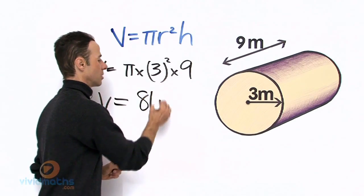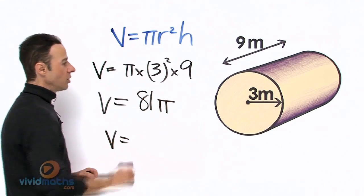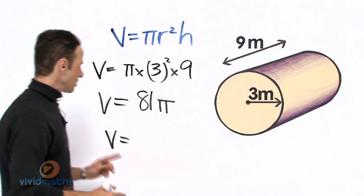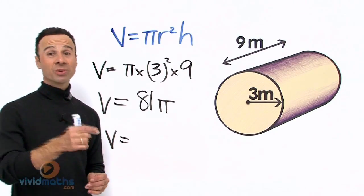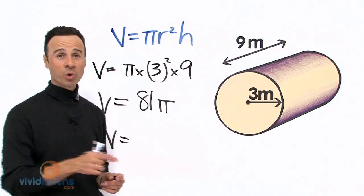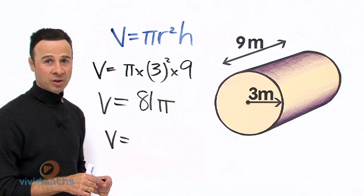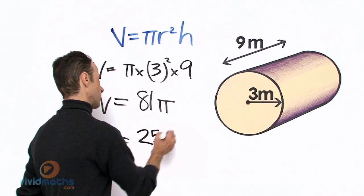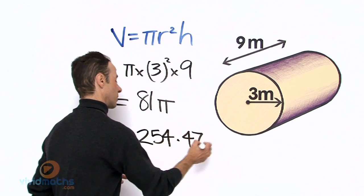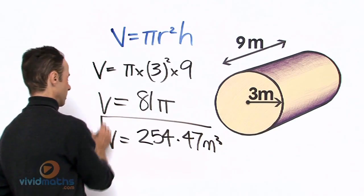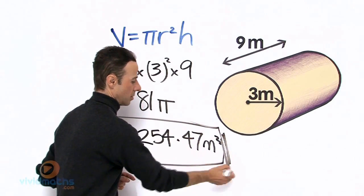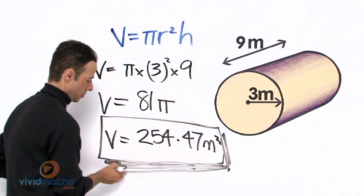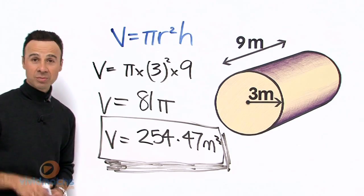So the complete volume inside the space of this cylinder is 81 times pi — or 81 times 22 over 7, or 81 times 3.14, and so on. Put that in your calculator and the grand total in meters cubed, to two decimal places, is...